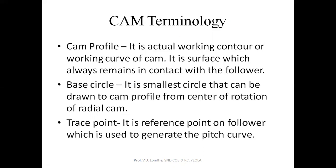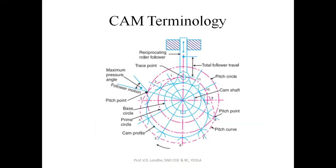The next definition is the base circle. The base circle is the smallest circle which is drawn concentric to the CAM. This circle is called the base circle.